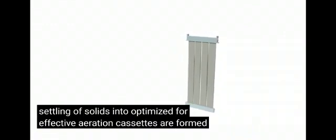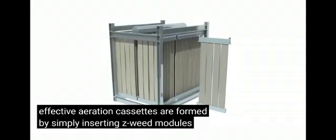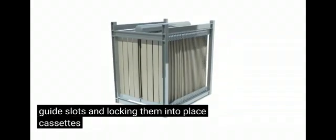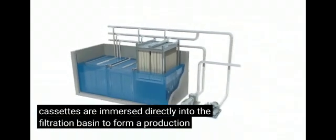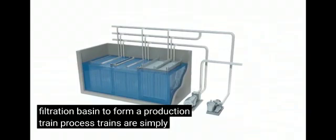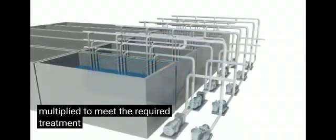Cassettes are formed by simply inserting Zweed modules into guide slots and locking them into place. Cassettes are immersed directly into the filtration basin to form a production train. Processed trains are simply multiplied to meet the required treatment plant capacity.